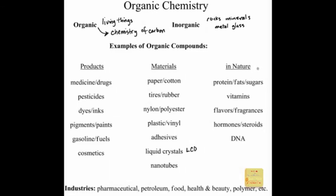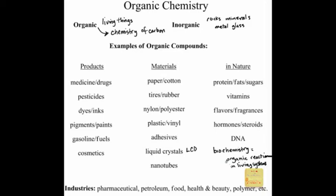In nature, organic chemistry is initially defined as having this relationship to living systems, and that's still quite true. The structure of proteins, fats, and sugars are all organic molecules — anything we eat and digest is an organic molecule. The vitamins essential to our existence, things we taste or smell, flavors, fragrances, hormones, steroids, and the structure of DNA are all organic. When you look at the field of biochemistry, these are all organic reactions in living systems, which is why it's critical to have a strong foundation in organic chemistry before moving on to biochemistry.